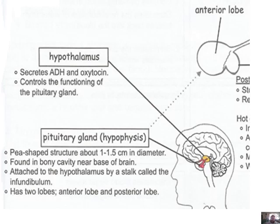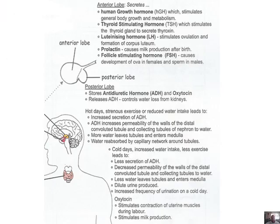The pituitary gland has two lobes: the anterior lobe and the posterior lobe. You can see the anterior lobe on the notes, and just to the right is the little stalk — the infundibulum — attaching the entire pituitary gland to the hypothalamus. You need to be able to tell me the difference between what is secreted by the anterior lobe versus the posterior lobe.